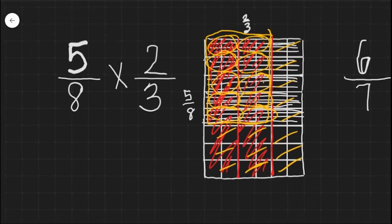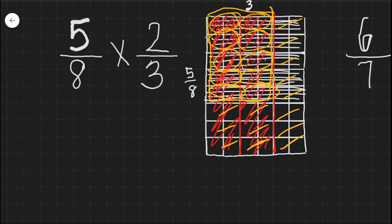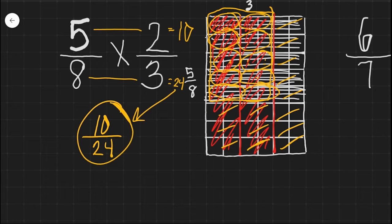Thirteen, fourteen, and fourteen plus ten is twenty-four. So I have ten twenty-fourths. If I multiply five times two, that equals ten. If I multiply eight times three, that equals twenty-four, and that is exactly what we got there.